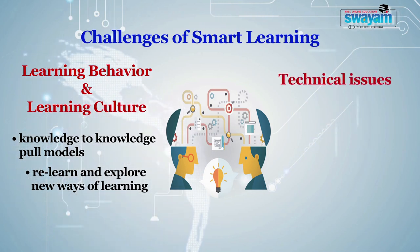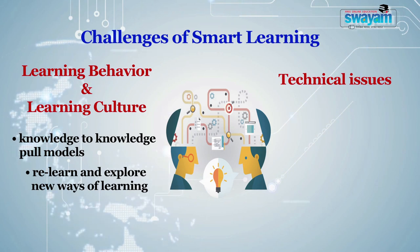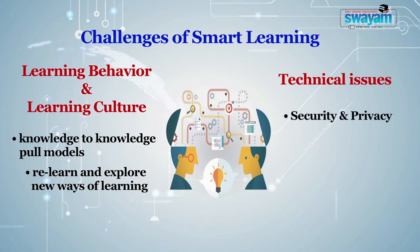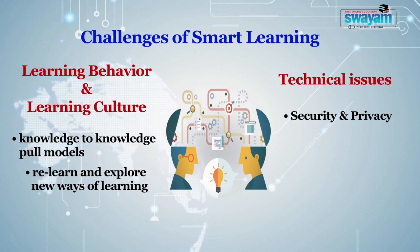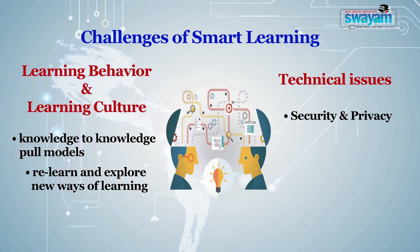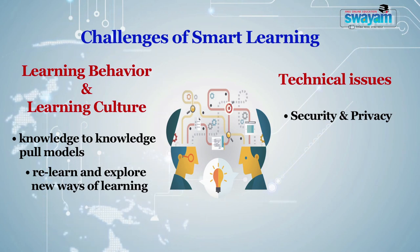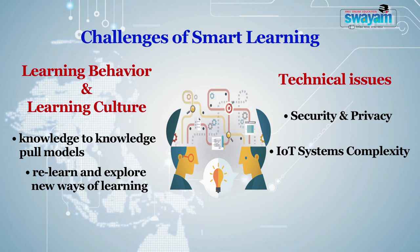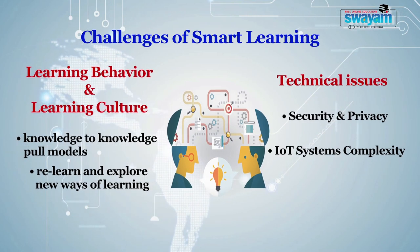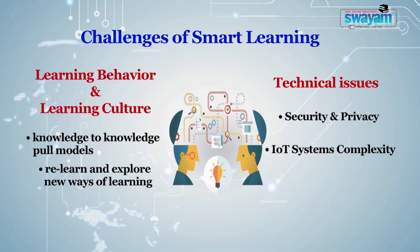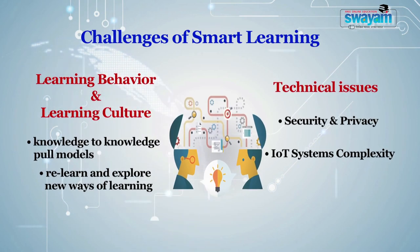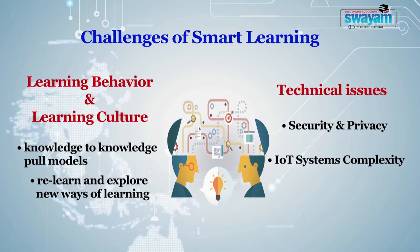The second level refers to more technical issues. Number one: security and privacy — the biggest challenge is data security and data privacy, and we must ensure that users always have control over data analytics. Another technical challenge is IoT systems complexity; we must naturally be careful that we do not become overly dependent on the technology.